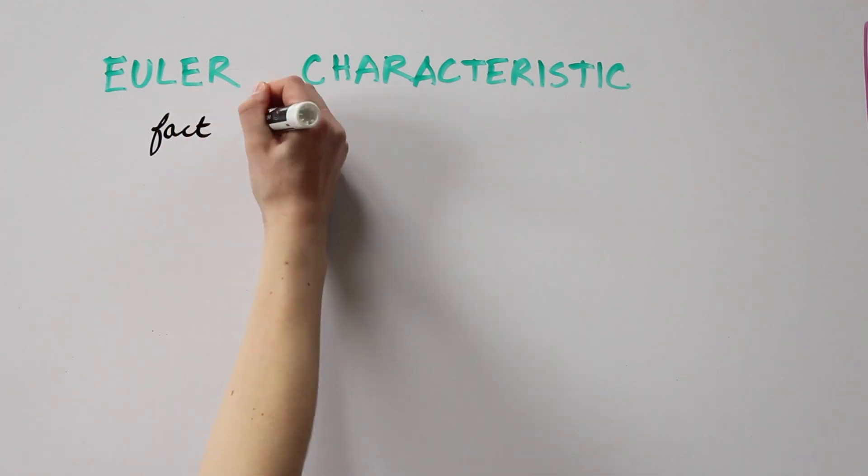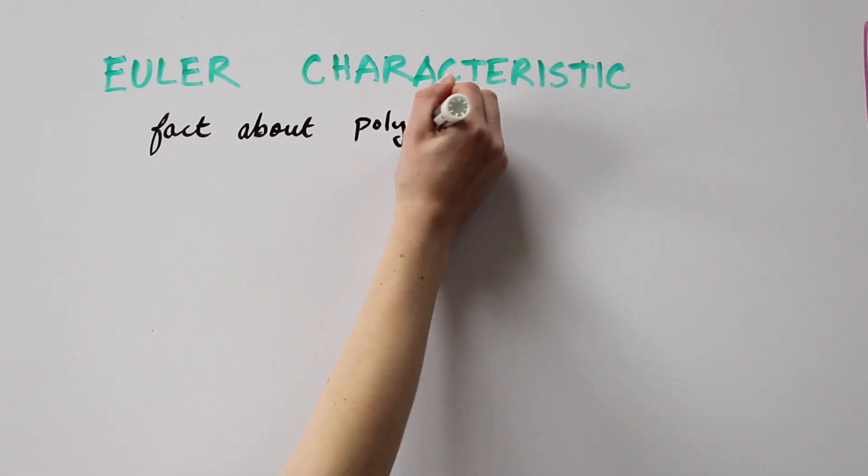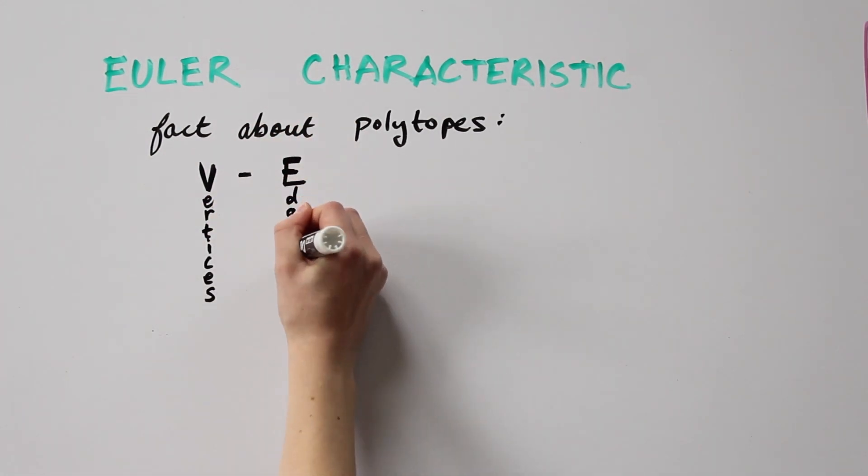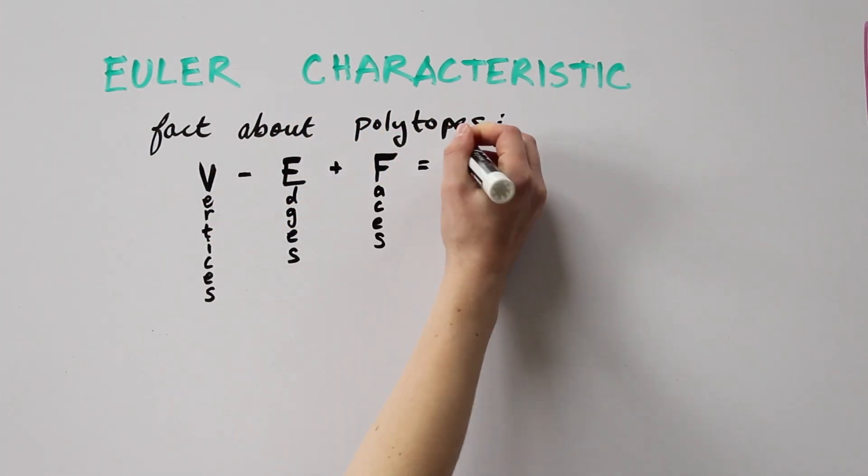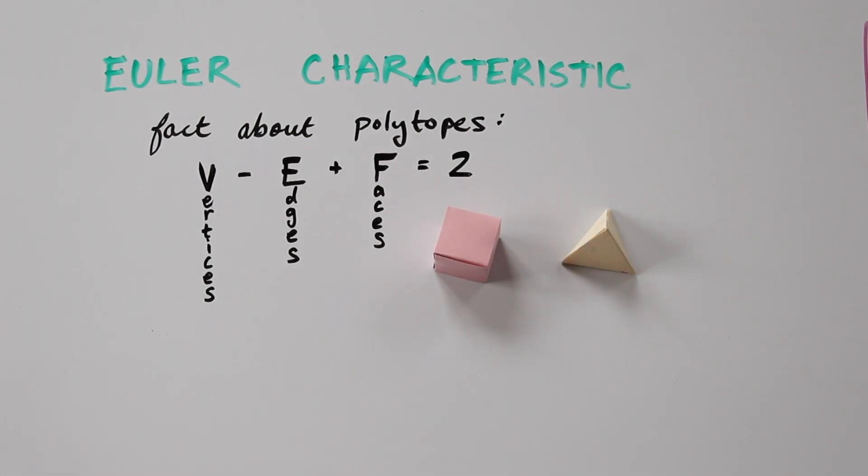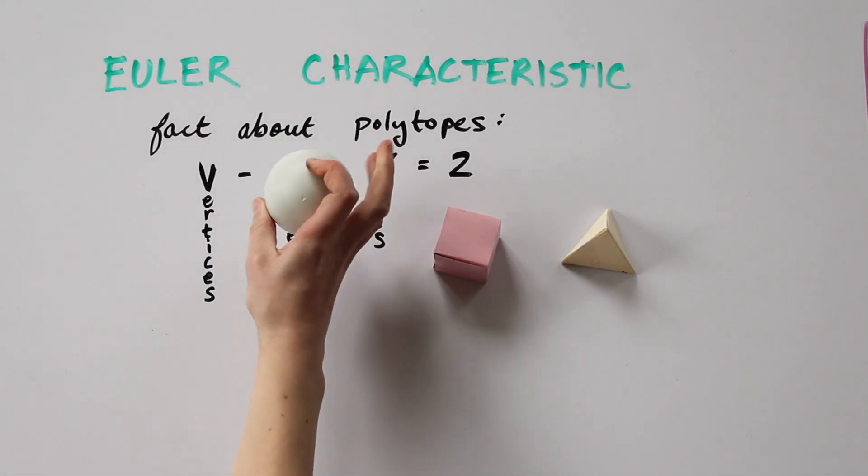You may have heard this fact about three-dimensional polytopes: that the number of vertices minus the number of edges plus the number of faces is two. For example, we can take the cube and the tetrahedron, which are both homeomorphic to the sphere by the way.